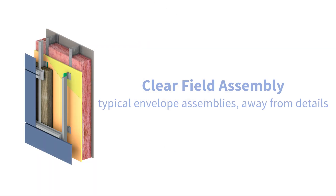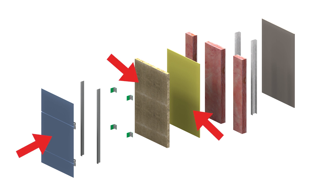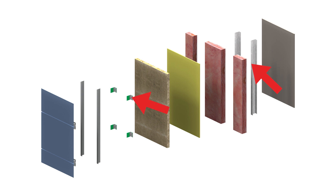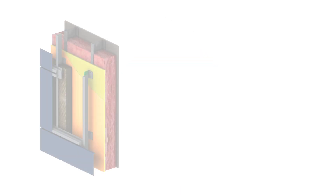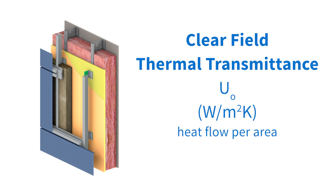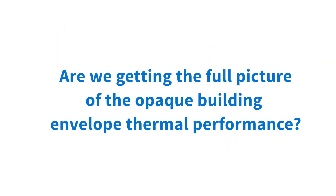The clear field. The first thing to include in a U value calculation are clear field assemblies, which are the main types of envelope constructions on a building. Clear field assemblies typically include sheathings, cladding, insulation, and other components, but also include frequently repeating thermal bridges that would be too cumbersome to count up individually. This includes thermal bridging components such as studs, brick ties, and supporting cladding or girts, but not transition details such as slab edges, which are accounted for separately. For each of these assemblies there is a clear field U value — the heat flow per area — that includes the impacts of these uniformly repeating thermal bridges. If only clear field assemblies are being looked at, which is current standard practice in North America, are we really getting the full picture of the heat flow through the opaque building envelope?